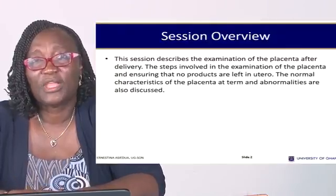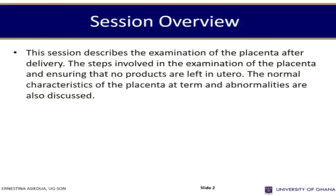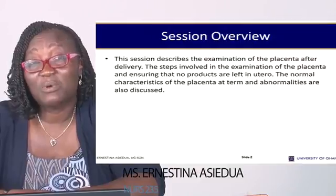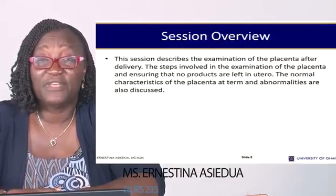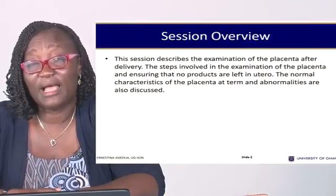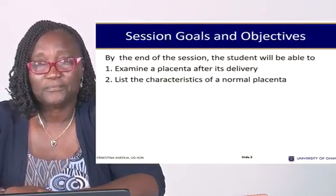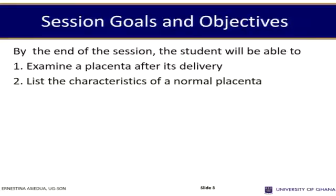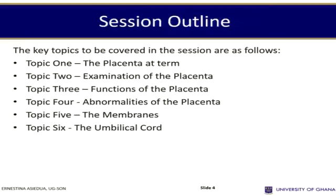Depending on what you find, you go into the uterus to bring it out before the woman begins to bleed. This session describes examination of the placenta after delivery, the steps involved in the examination, and ensuring that no products are left in utero. The normal criteria of the placenta at term and abnormalities are also discussed. If you want to know the abnormal, it is important that you first know what is normal, so that any deviation from normal indicates an abnormal placenta.